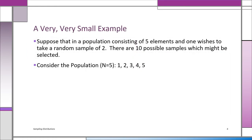Let's look at a very trivial example to help you understand the whole idea of sampling from a population and the various kinds of x-bars. It helps you understand what it means when we say x-bar is a random variable. Let's take a population that's very small — 5 elements: 1, 2, 3, 4, 5. We're taking samples of size 2.